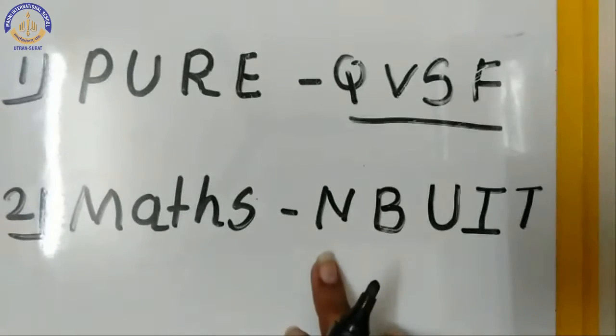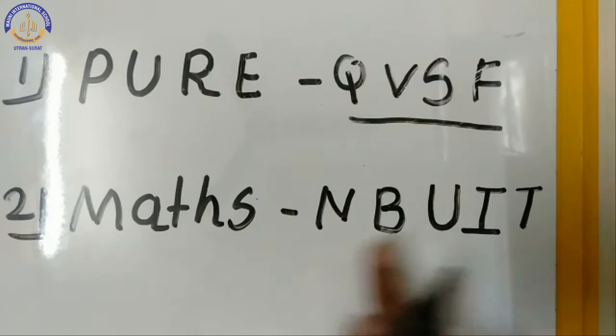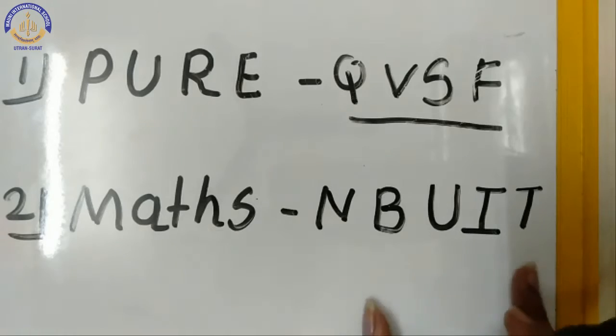So N, B, U, I, T is our code. N, B, U, I, T is our code.